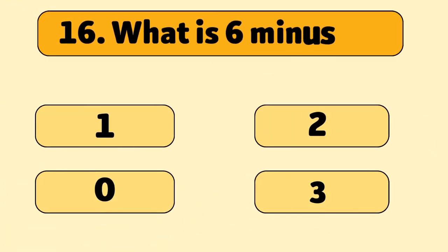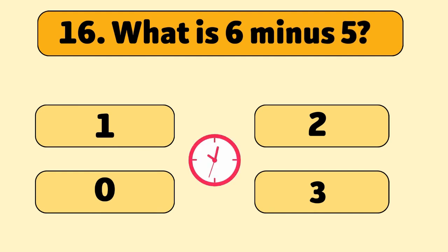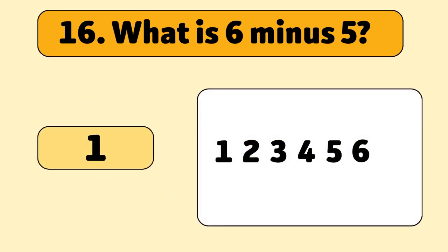What is six minus five? One. Start with six and take away five, and we're left with one.